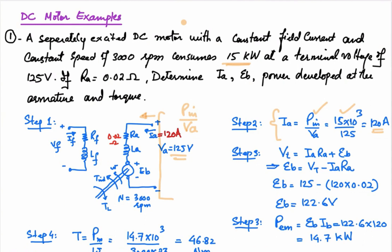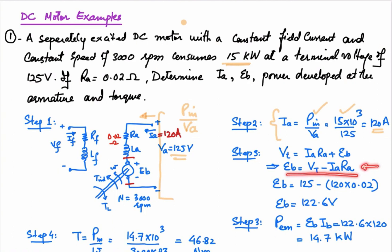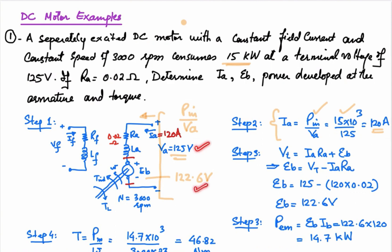Next we determine the back EMF. Writing the voltage equation, the terminal voltage Vt must equal the voltage drop across the armature resistance plus the back EMF: Vt = Ia·Ra + Eb. Rearranging gives Eb = Vt − Ia·Ra. Plugging in values, the back EMF is 122.6 volt. The terminal voltage is 125 volt, which is greater than the back EMF — this confirms the machine is operating as a motor and power flows into the machine.